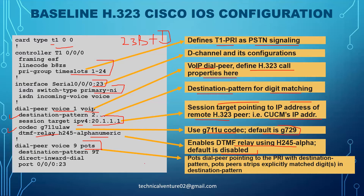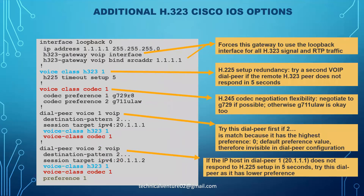For the POTS dial peer - 'dial-peer voice 9 pots' - this handles IP-to-PSTN connectivity. The destination pattern '9T' means every number starting with 9, regardless of total digits. The 'direct-inward-dial' command is added, and 'port 0/0/0:23' specifies which port the PRI is connected on. Calls matching this dial peer will go out to PSTN via that PRI port.